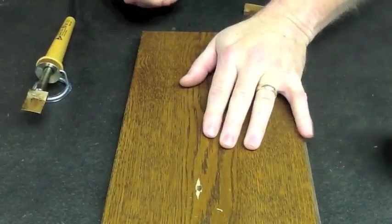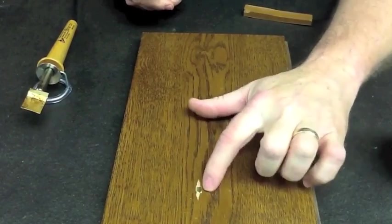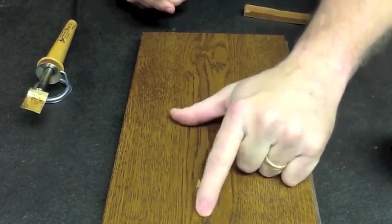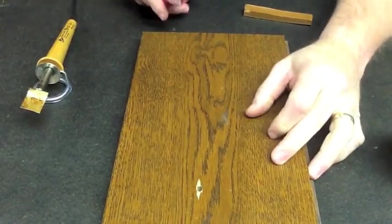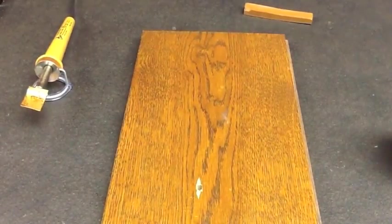A lot of times we refer to this as dog earring, just putting a dog ear up there. Now when we fill this, it's going to blend much easier instead of being a perfectly round hole to deal with.